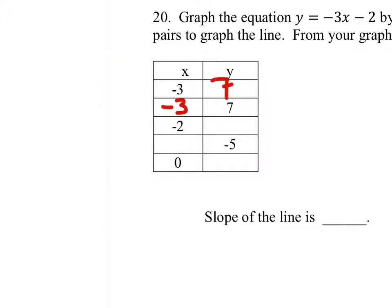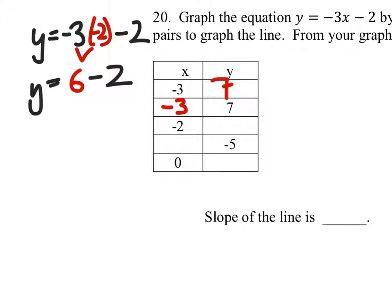Alright, let's try when x is negative 2 then. So we got y equals negative 3x minus 2. Again, we're replacing the x with negative 2. So negative 3 times negative 2 is 6. Y equals 6 minus 2. And so y equals 4. Well, that will fit on the graph. That's nice.